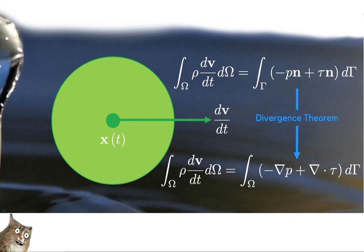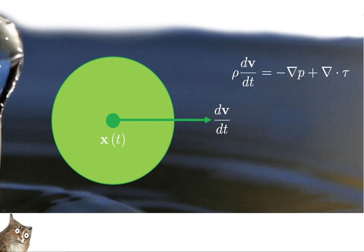This leaves us with Newton's second law for an arbitrary blob of fluid. Because our fluid blob is arbitrarily chosen, we want this integral to hold for any volume omega, and the easiest way to ensure that is to make it hold for every point in the fluid. This implies that rather than satisfy the integrated equality, we want to satisfy the equality in a pointwise fashion.